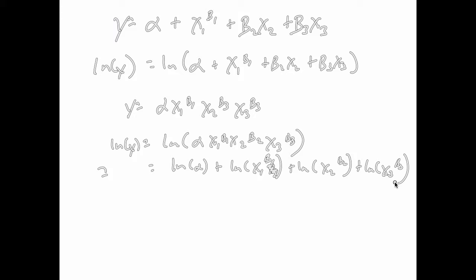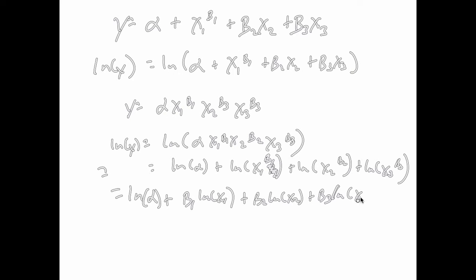We also know that log of x to the alpha equals alpha times log of x. So finally we end up with log of alpha plus beta 1 log of x1 plus beta 2 log of x2 plus beta 3 log of x3. Taking the log of both sides does help us a lot. All the coefficients are included linearly in the regression model. If we change our variables from x to log of x and y to log of y, we can write this as a standard linear model.